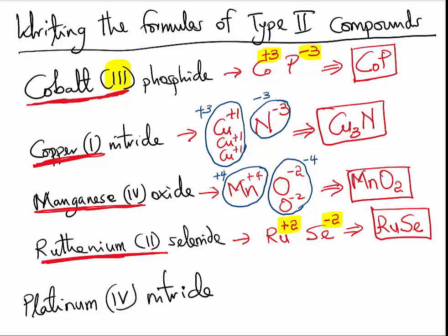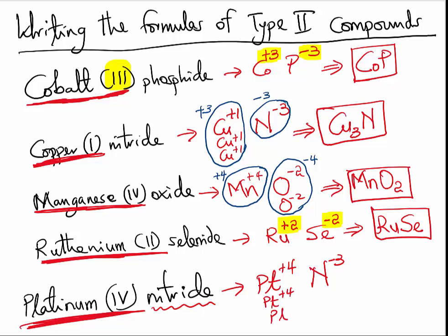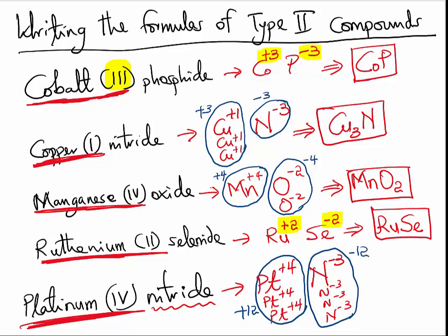And lastly, we have Platinum(IV) nitride — platinum with a charge of plus 4, and nitrogen from group 5A with a charge of minus 3. To balance out the two charges, we will need 3 platinum atoms so that the total positive will be 12, and we will need 4 nitrogen atoms so that the total negative will be negative 12. So the formula of Platinum(IV) nitride will be Pt₃N₄.